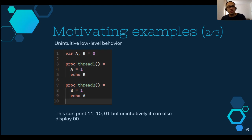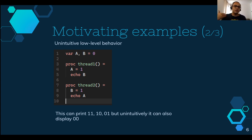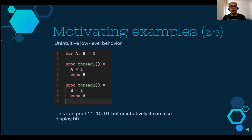Second example: you have two global variables A and B initialized to 0, and two threads. They assign 1 to one variable and echo the other. This can print 1,1 or 1,0 or 0,1, and unintuitively it can also print 0,0. Why? The compiler sees that A equals 1 and echo B are independent, so it's free to reorder them. It can do echo B before A equals 1 because you didn't express any ordering constraint. So the compiler can reorder the echo before the assignment, and 0,0 can be displayed.